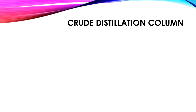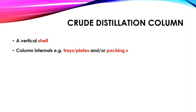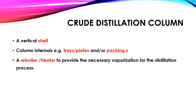Normally a crude distillation column is a vertical vessel with one shell. Column internals include trays, plates, and packings. The distillation column bottom has one reboiler or heater to provide the necessary vaporization for the distillation process.